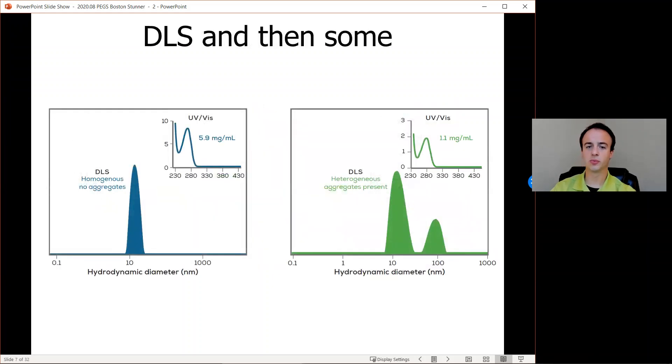Concentration and sizing info from one microvolume sample means that you can avoid sending samples to the next step in your process if they have aggregation problems. For example, the protein on the left in blue is a homogeneous antibody that shows no presence of aggregates. Great! While the protein on the right in green has begun aggregating. So now you can catch those problems earlier with less volume and in the same step as quantification.